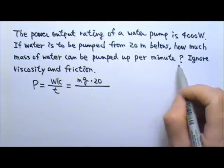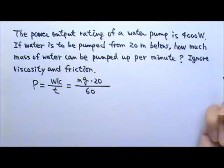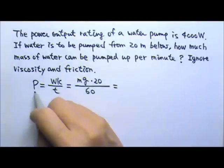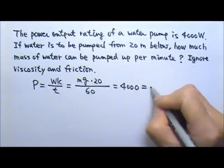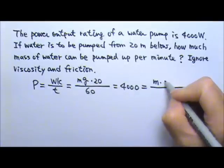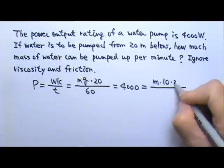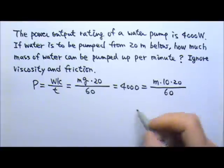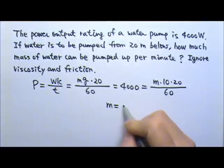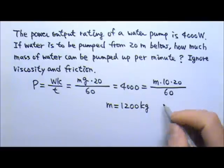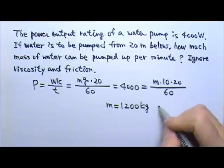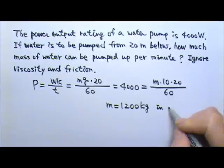So this would equal to, the power is 4000 watts. And we don't know the mass. If I use g equals 10, then this is what I have. And that means I'm going to get mass is 1200 kilograms. So the pump can pump 1200 kilograms of water in a minute.